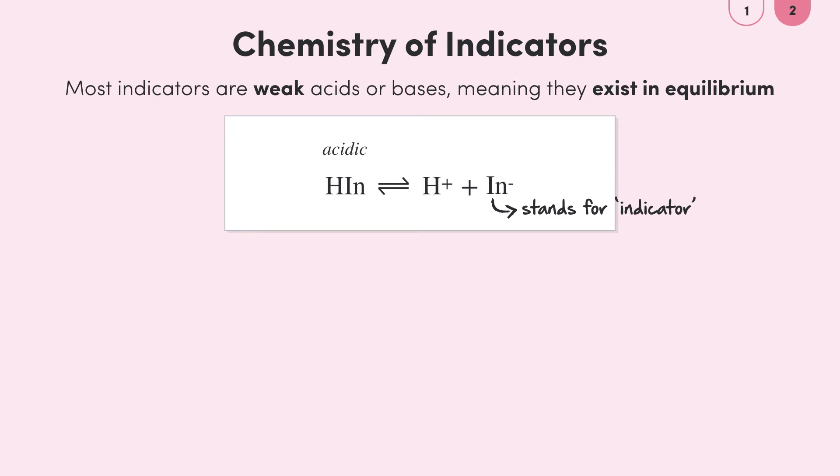Since indicator molecules can be quite complicated we can summarize them to be In in this general equilibrium. So HIn is the acidic form of the indicator whilst this In is the basic form of the indicator. Importantly the acidic form and basic form of the indicator are different colors. Let's say for example that the acidic form HIn is green for this specific indicator and the basic form is yellow.